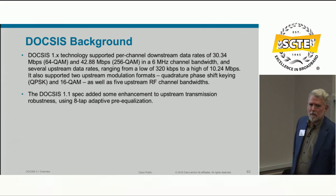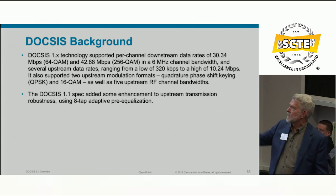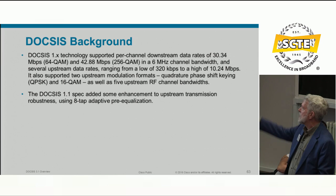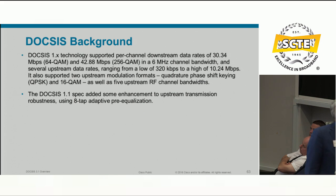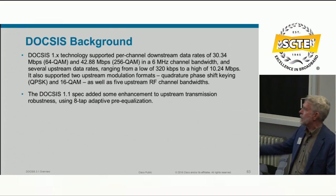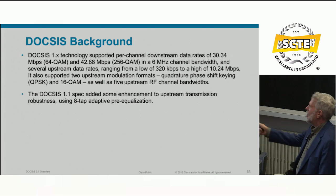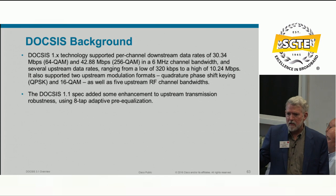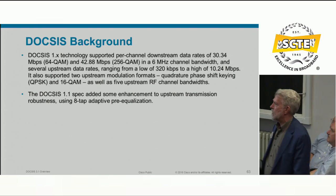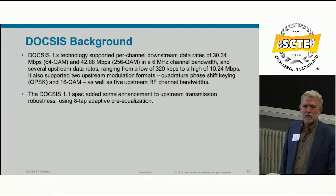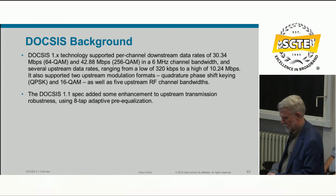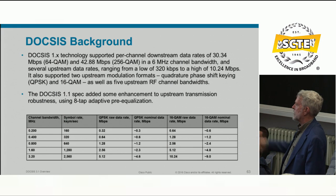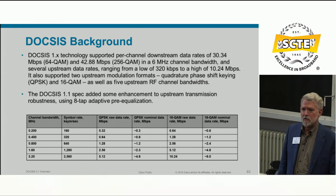DOCSIS 1.x supported raw data rates of 30.34 Mbps with 64 QAM and 42.88 Mbps with 256 QAM in the downstream, where QAM is Quadrature Amplitude Modulation. Upstream data rates ranged from 320 kbps up to 10.24 Mbps. These are raw data rates — overhead knocks those numbers down a bit. DOCSIS 1.x also included 8-tap adaptive pre-equalization to compensate for micro-reflections in the cable network.